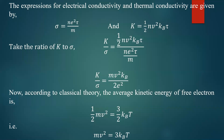We have to prove that k by sigma is directly proportional to temperature, so we need to introduce a temperature term on the right-hand side. Using classical theory, the average kinetic energy of a free electron is given by one-half m v squared equals three-halves k_B T. From this, m v squared equals 3 k_B T. We substitute this to introduce temperature into the expression.